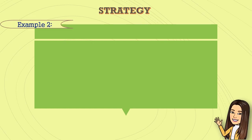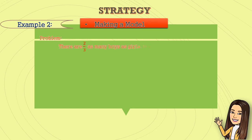Example number two: Making a model. There are two-thirds as many boys as girls. If there are 30 girls, how many boys are there?